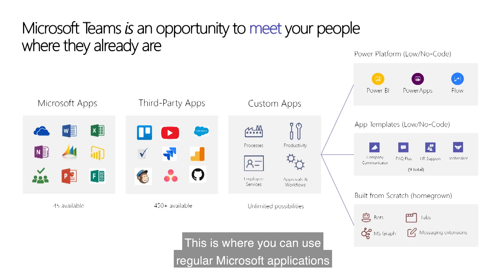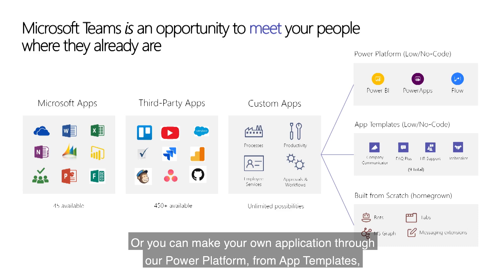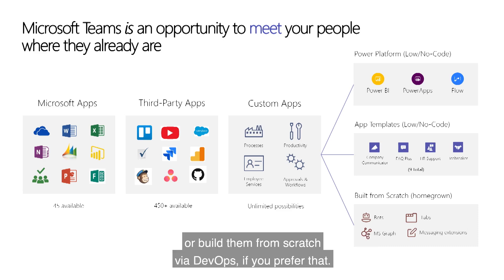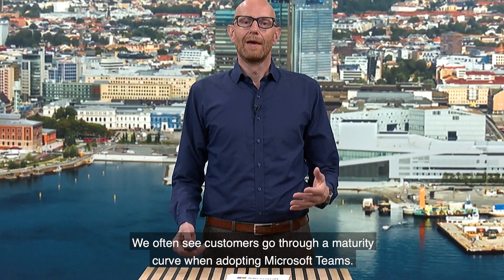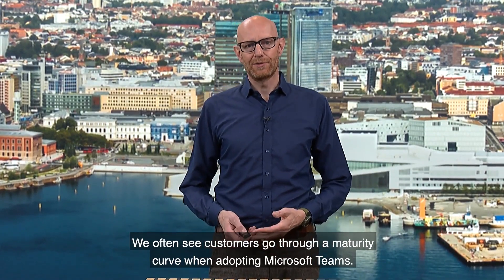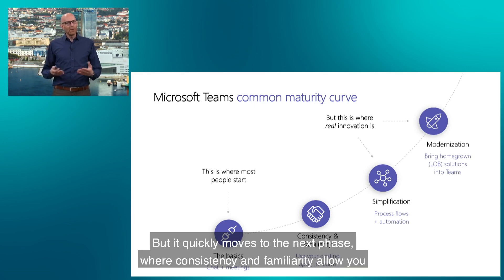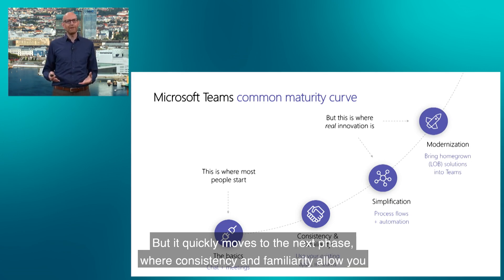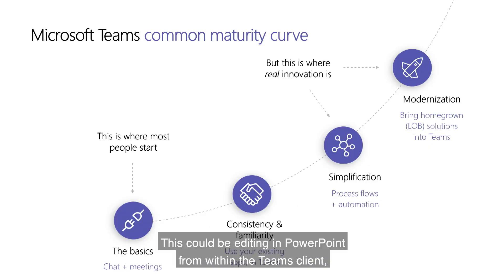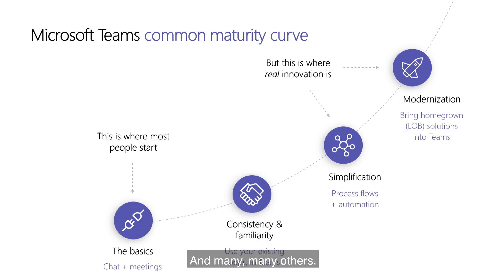This is where you can use regular Microsoft applications like Word, PowerPoint, Excel, and so on. You can use hundreds of third-party applications, or you can make your own application through our Power Platform from app templates, or build them from scratch via DevOps. We often see customers go through a maturity curve when adopting Microsoft Teams. It starts off with the key basic features like chats and meetings, but quickly moves to the next phase where consistency and familiarity allow you to use existing applications within Teams — such as editing PowerPoint or storing files in SharePoint.